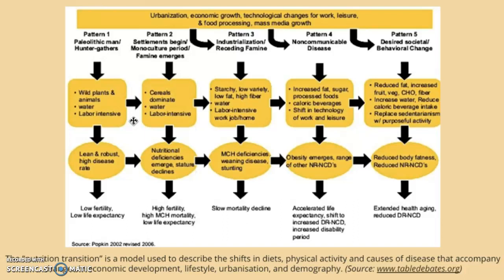As you move into the next stage, settlements begin and monoculture emerges — the period of famine. Cereals dominate, water and labor are still intensive, but there are fewer wild plants and animals. It's more the idea of agricultural settlements.